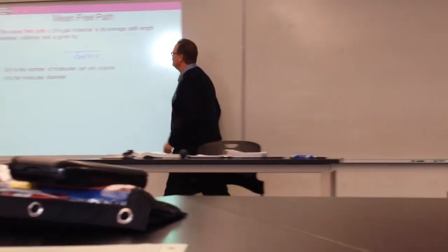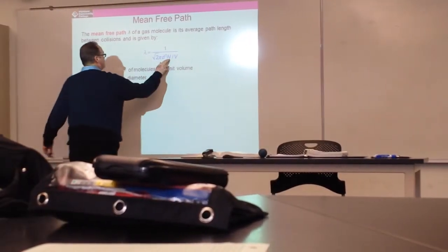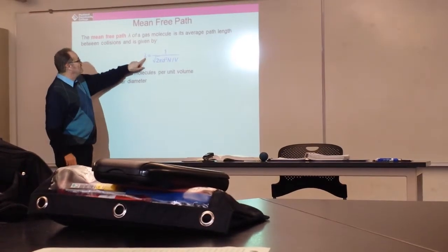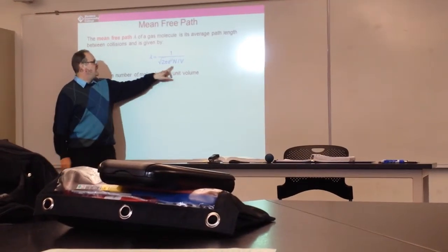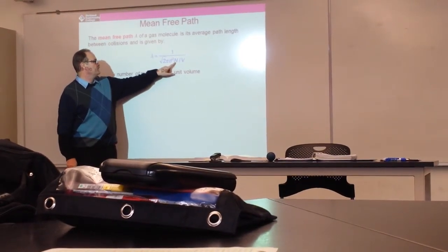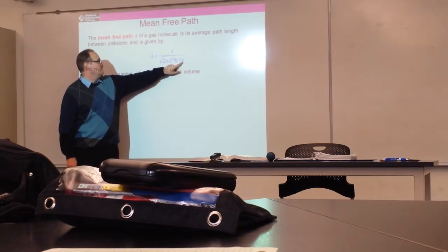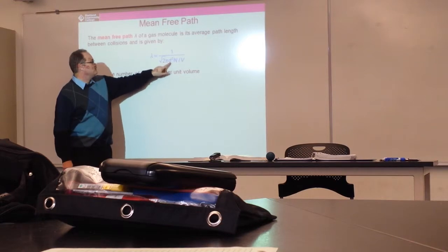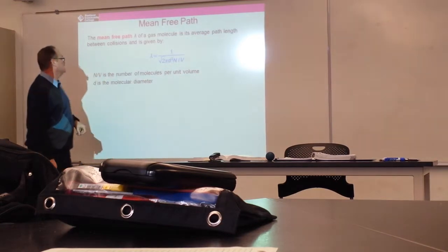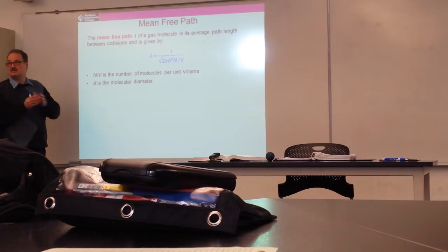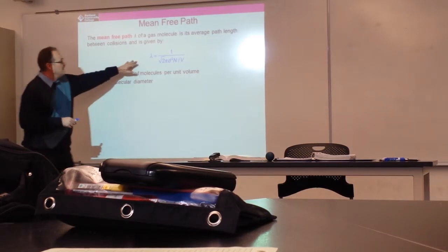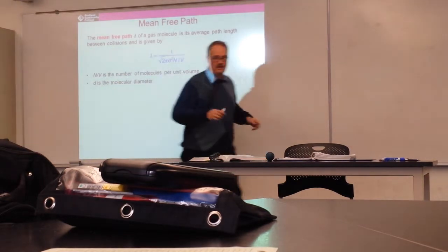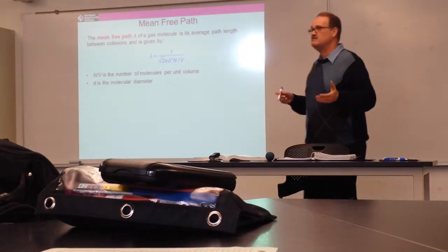And the length of the path that they can follow before they hit another molecule is called the mean-free path. So lambda is the mean-free path, and it's related to the number of molecules in the gas divided by the volume of the gas times square root of 2 pi rd, where d is the molecular diameter. Now, I'm not going to derive this. You can read it in your book. All I'm going to do is kind of argue why this makes sense.